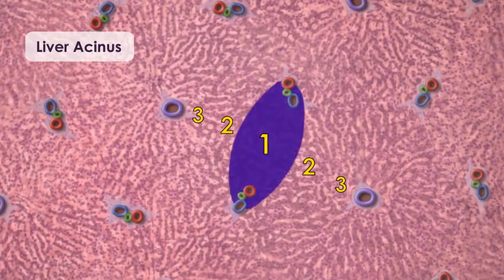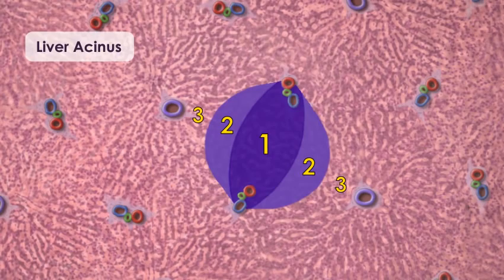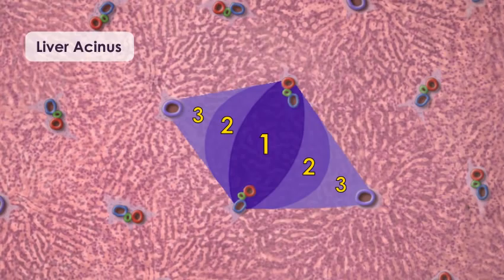Cells in zone one lie along the short axis between the portal triads. Thus, these cells are first to receive everything in blood, including oxygen, absorbed nutrients, and absorbed xenobiotics. Cells in zone two have characteristics intermediate between the cells of zones one and three. Cells in zone three are closest to the central vein and therefore are the last to receive incoming blood. As blood moves towards the central vein, it becomes depleted of oxygen, nutrients, and xenobiotics.